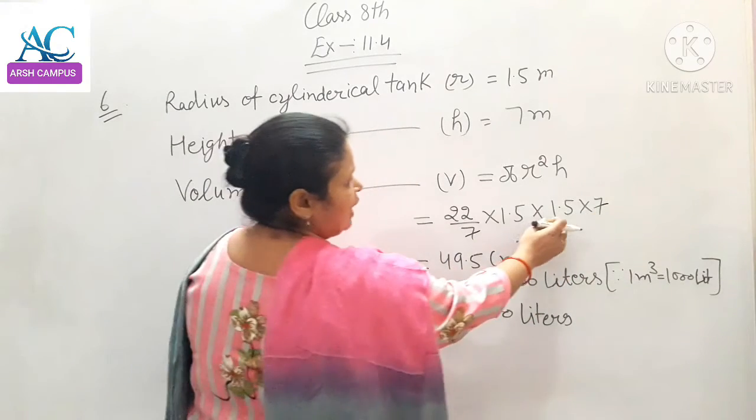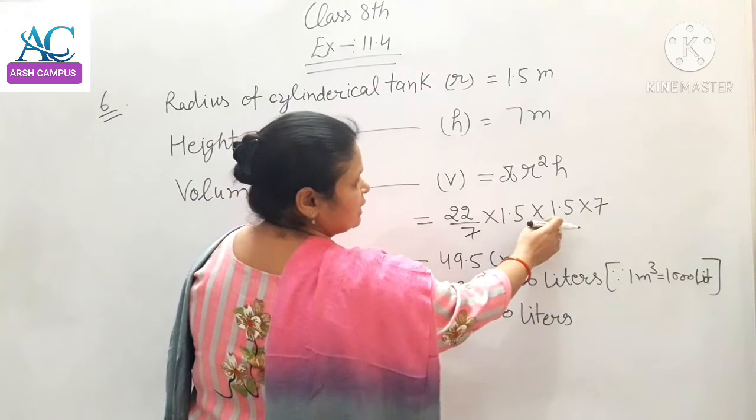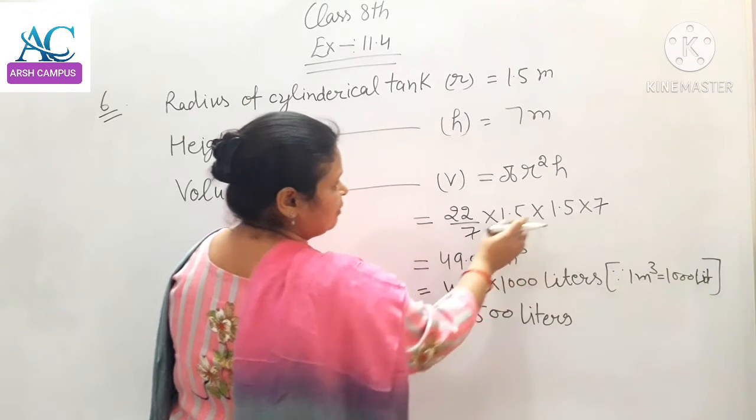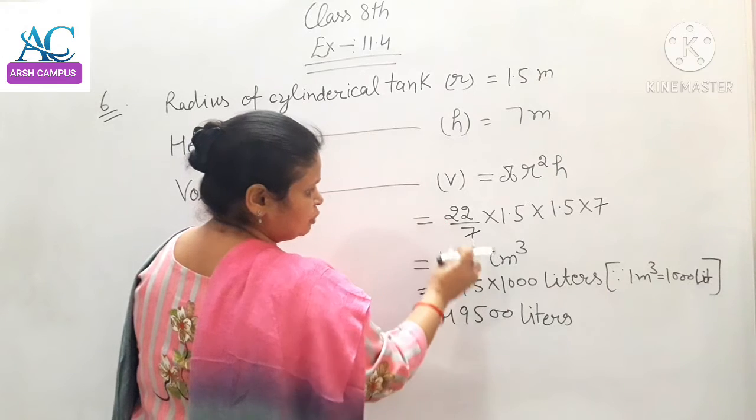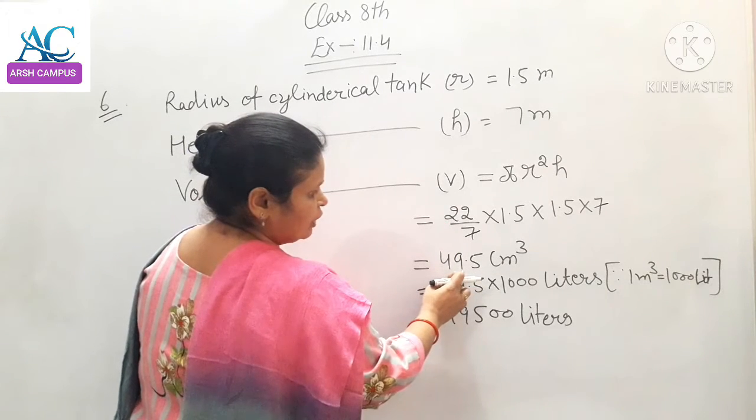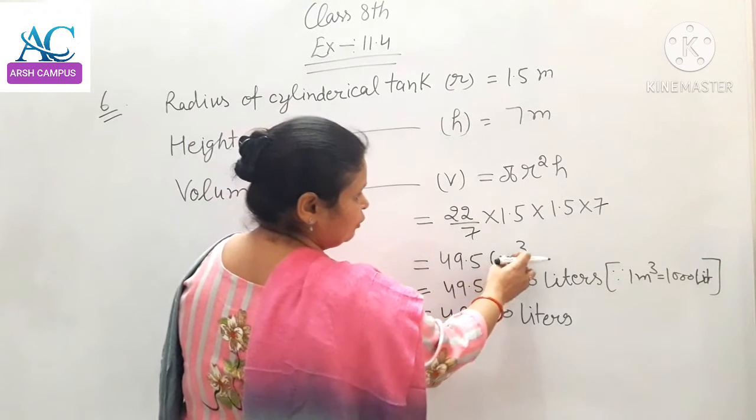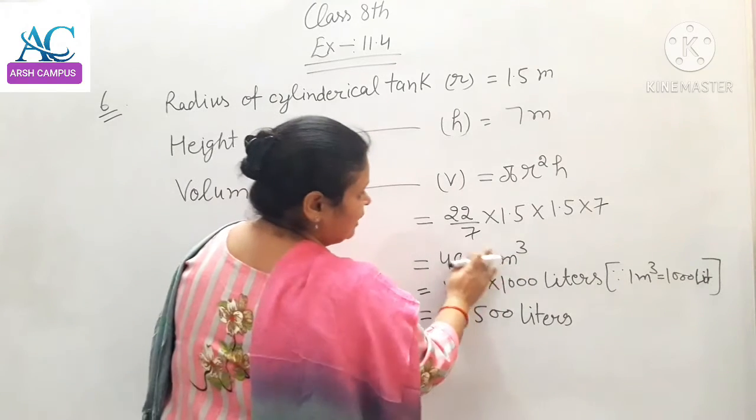1.5 square means 1.5 multiplied by 1.5, then multiply by 22. This gives 49.5 meter cube, meter cube sorry.